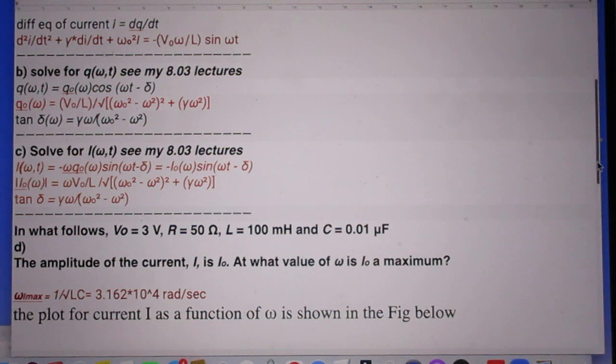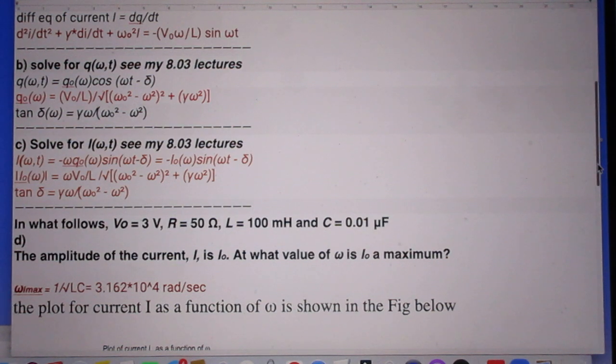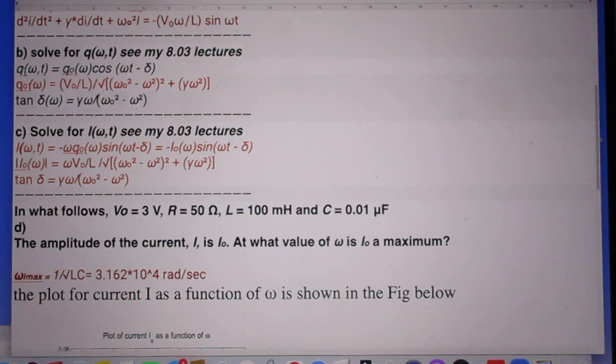Solve for q which is a function of omega and I suggest you watch my 803 lectures in which I cover this. So q as a function of omega is q zero times cos(ωt - δ) and I cover that in my lectures. And q zero is then V zero divided by L divided by the square root of (ω₀² - ω²)² plus γ²ω². And this is the tangent of delta. So delta is the phase angle. So this is the solution to b.